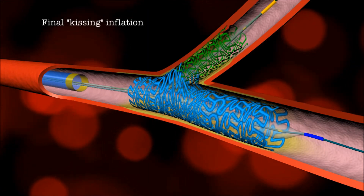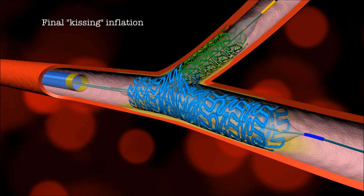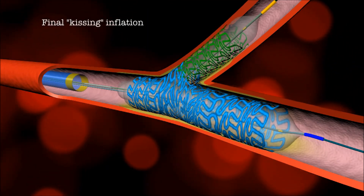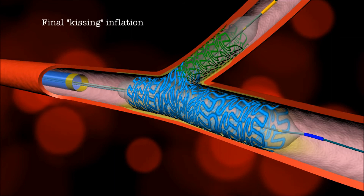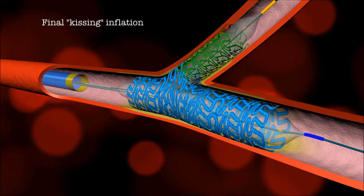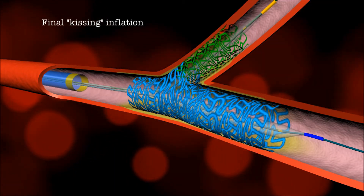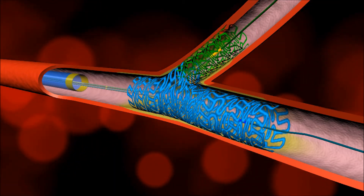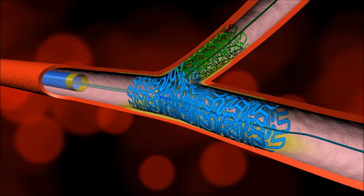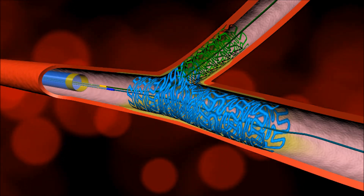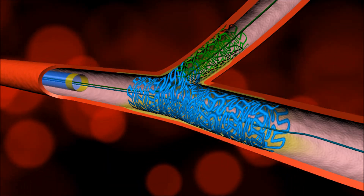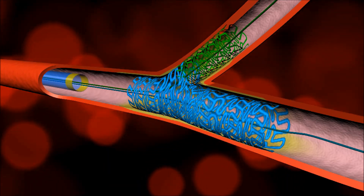This is followed by kissing balloon inflations, finalizing the deployment. The two balloons are sized based on the two daughter vessels per Murray's law, thus obviating the need for additional balloons.